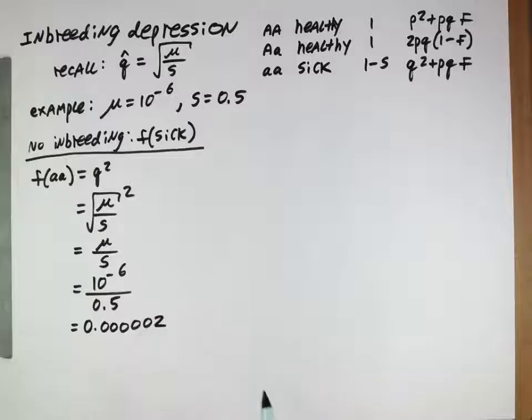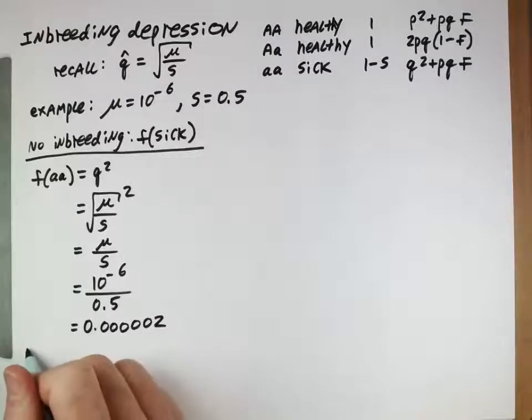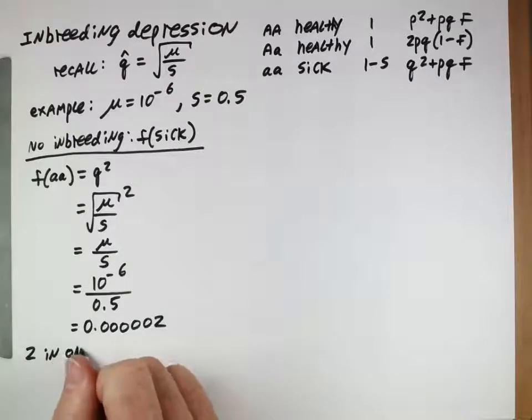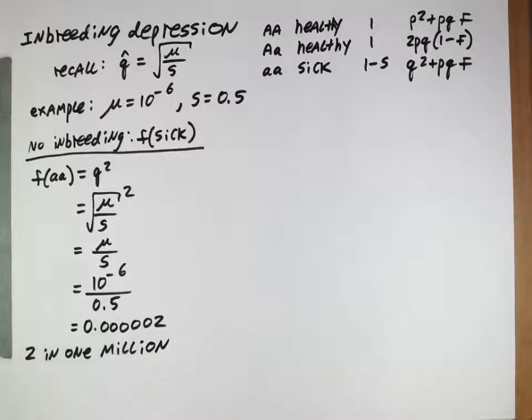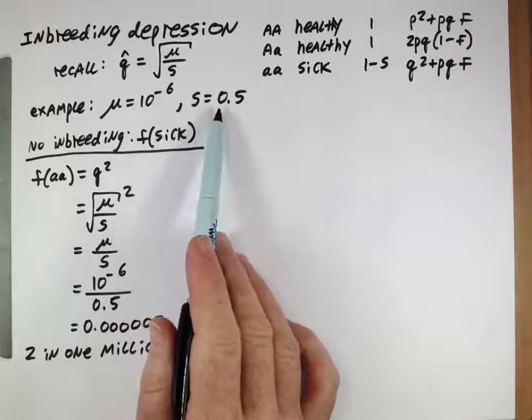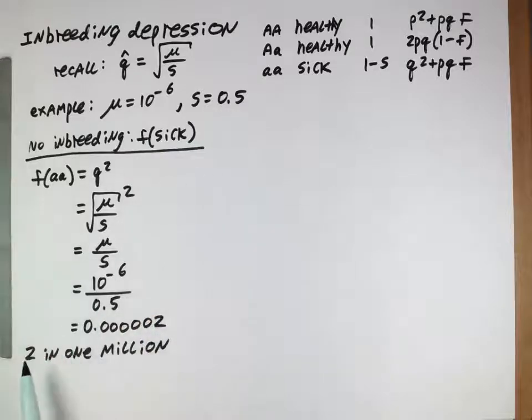This equals 0.0000002 if we write it out. This actually means in a population two individuals out of every million will be sick. In a population with no inbreeding, with this mutation rate and this selective disadvantage, about two individuals out of every million will show this deleterious phenotype and be sick.